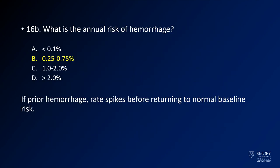Our question was: what is the annual risk of hemorrhage for these lesions? It's a little bit less than 1%. When patients have had prior hemorrhage, the rates spike in the immediate near future, but eventually they return to this normal baseline risk of less than 1% per year.